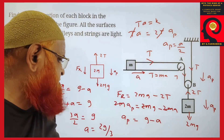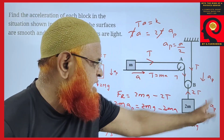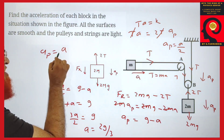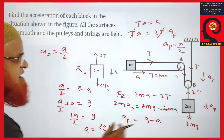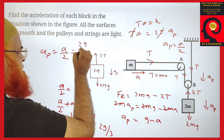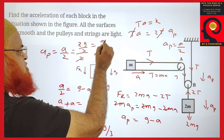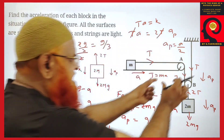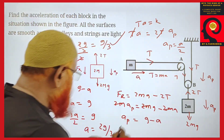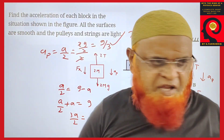So A equals 2G/3. To find acceleration of the pulley, it is acceleration of the block divided by 2, which is 2G/3 divided by 2, giving G/3. So acceleration of the pulley is G/3 and acceleration of the block is 2G/3. So simple it is. Thank you very much.